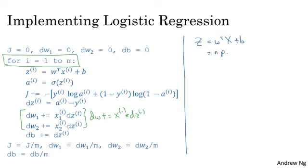you would say capital Z equals w transpose X plus b. And the code you write is capital Z equals np dot w transpose X plus b. And then A equals sigmoid of capital Z. So you've now computed all of this for all the values of i.